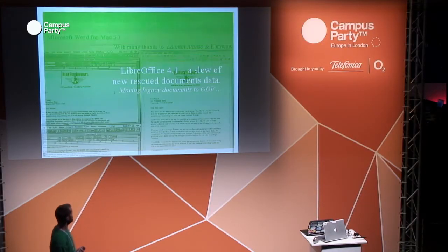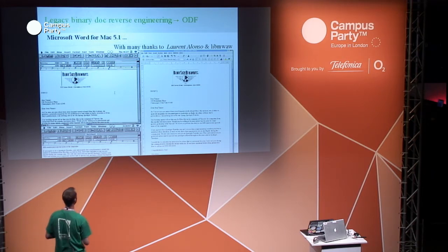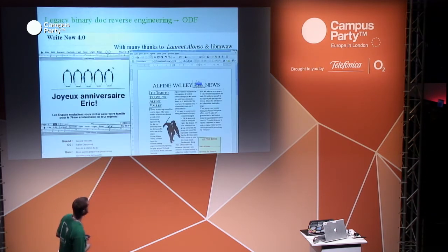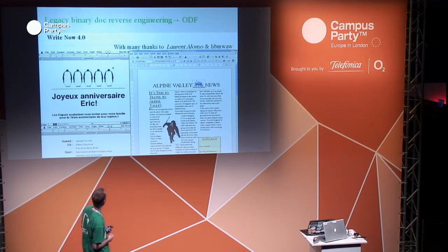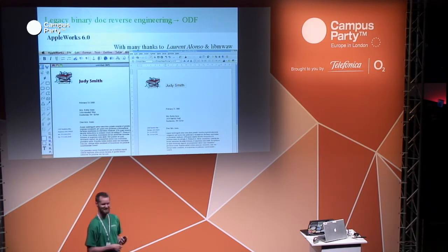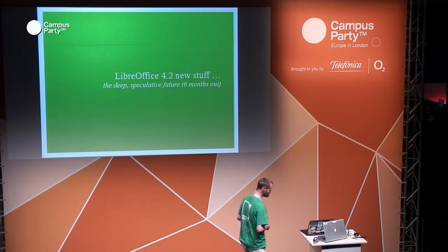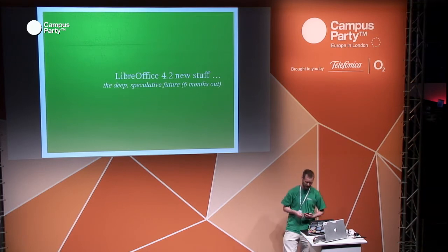There are lots of legacy document formats — Microsoft Word for Mac 5.1 and Apple Works 6, classics of the software world — that produce dot-matrix style documents. We're now starting to rescue people's documents from those eras and move them into ODF, making them useful and future-proof.